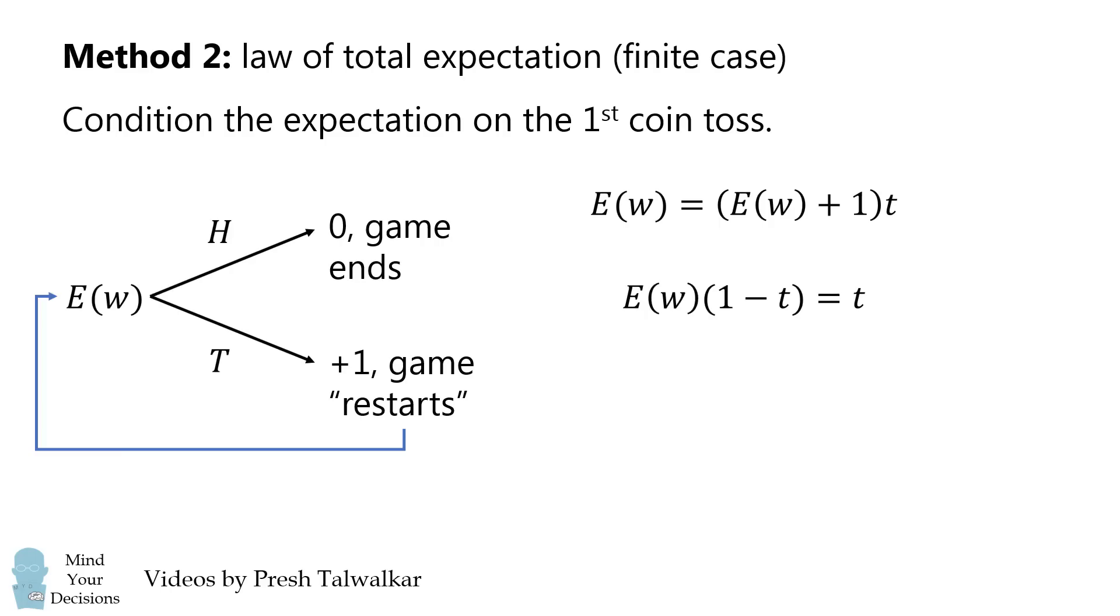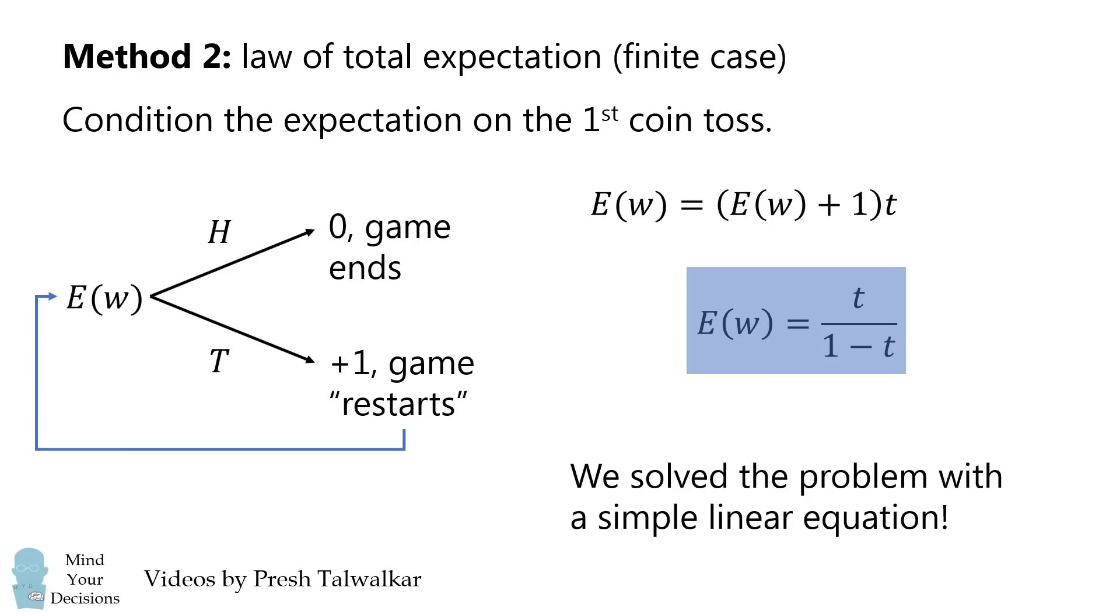We then collect the terms of E(W), and then divide both sides, and we get our answer. The average winnings will be T all over 1 minus T. So we solve this using a simple linear equation. So I think this method is also very interesting to learn.